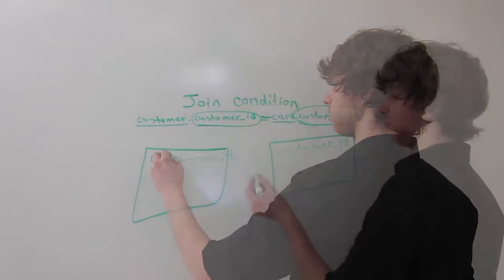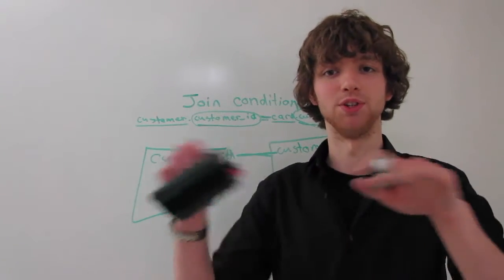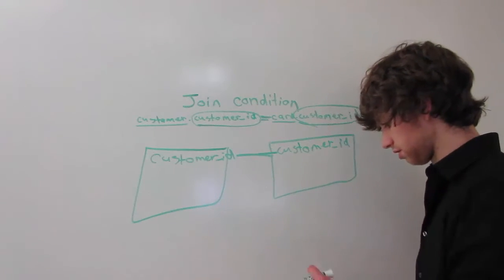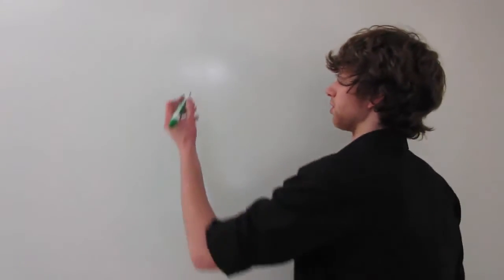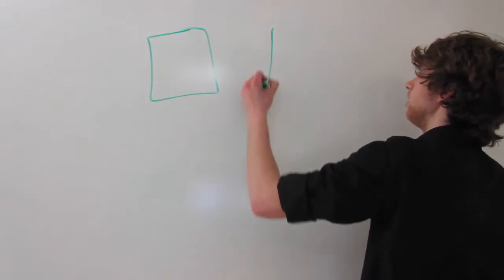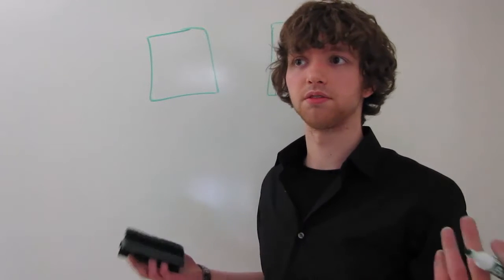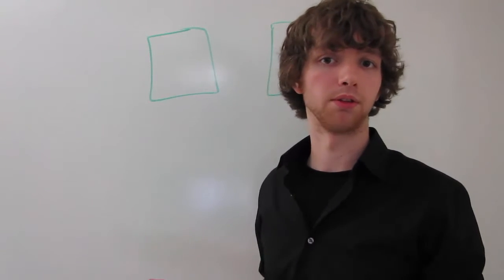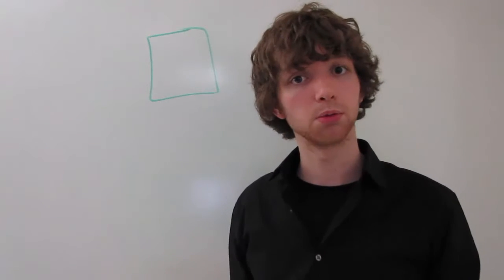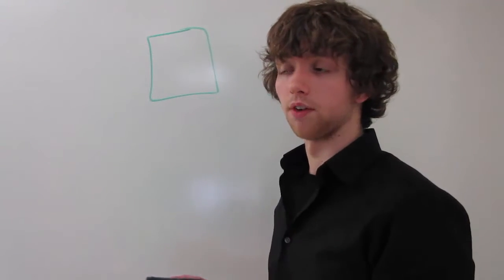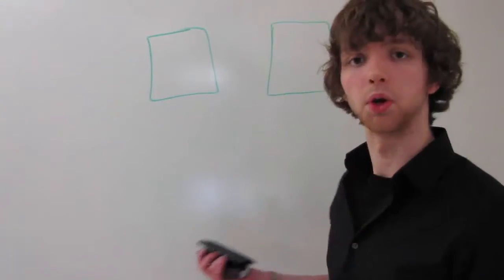So the two columns here are going to make a connection and our join is going to be built upon that so we know where to connect things. This is like a bank scenario where people can get credit cards. A person doesn't necessarily have to have a credit card, and a card doesn't necessarily have to have a current owner — it could be a disabled card or one that hasn't yet been activated. So there are no required columns for this.